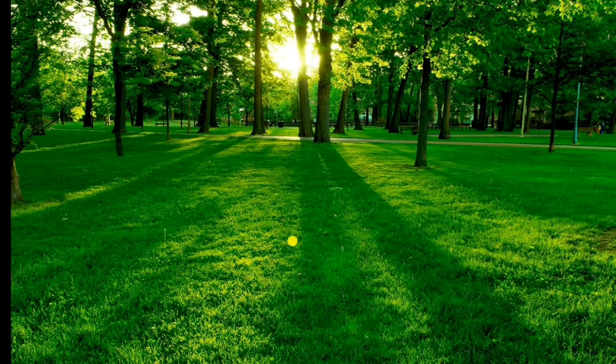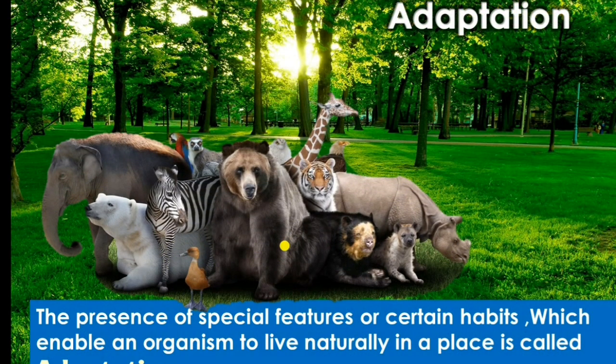In every habitat there are different animals. For example, fish are in water — how can they stay in water? Because there are some changes developed in them, such as gills and fins, which allow them to live in water. The same animals are not living everywhere; different habitats have different changes. These changes are called adaptation — the presence of special features and certain habits which enable organisms to live naturally in a place.